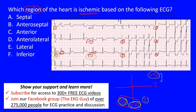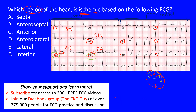So two contiguous leads, and then you have these reciprocal changes — ST elevation in the inferior leads and reciprocal ST depression in Lead I and AVL. Reciprocal changes are pretty much the opposite, mirror-image changes you're seeing on the other side of the heart. In AVL and Lead I, we see ST depression, and down here in Lead III and AVF, we see ST elevation — they're opposite of each other.